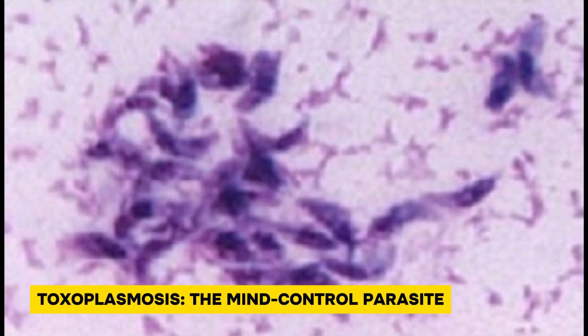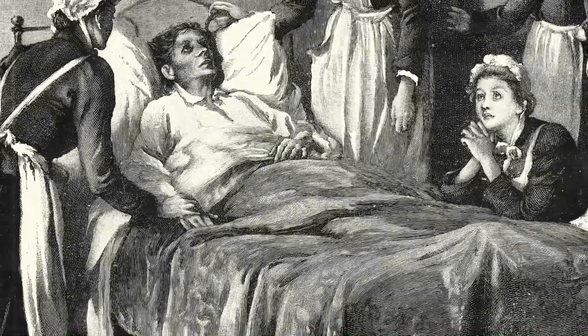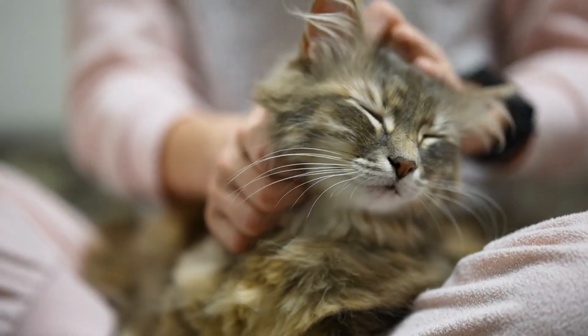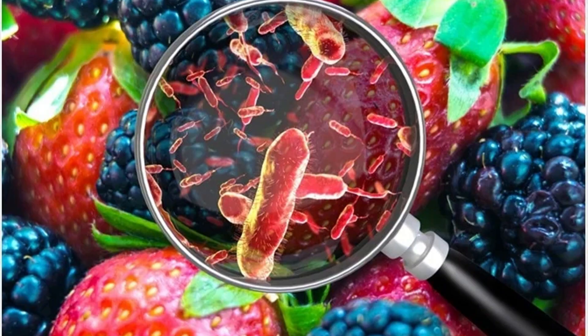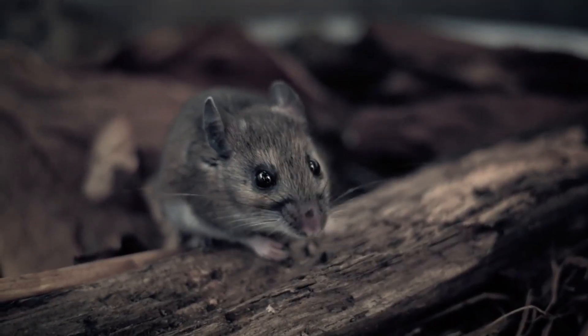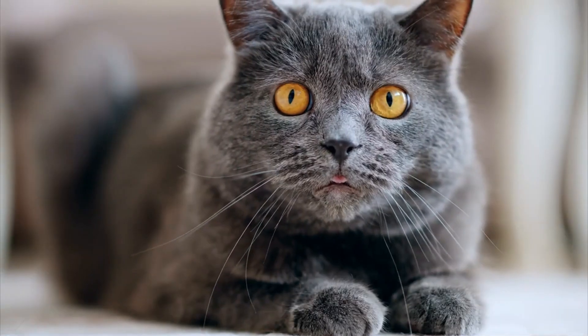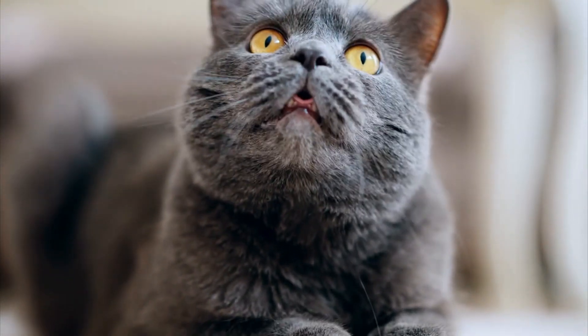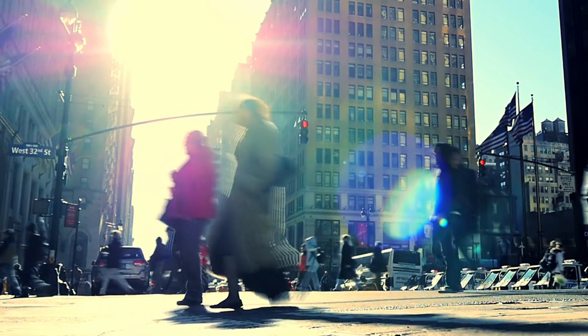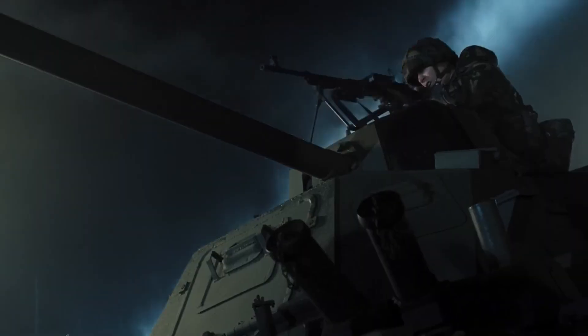Toxoplasmosis: the mind-control parasite. Toxoplasma gondii, a protozoan parasite, is another candidate due to its ability to alter host behavior. Found in mammals including humans, it is transmitted through contact with infected animals — especially cats — or contaminated food. In rodents, toxoplasma manipulates the brain, reducing fear of predators and increasing risk-taking behavior, which benefits the parasite by facilitating its transmission to cats, its definitive host. In humans, toxoplasma infection is often asymptomatic but can subtly influence behavior. Studies suggest it may increase impulsivity, aggression, or even the risk of schizophrenia in some individuals. Approximately one-third of the global population is infected, yet severe effects are rare. A zombie-like scenario would require toxoplasma to evolve extreme behavioral manipulation, rapid transmission, and widespread neurological damage — far beyond its current capabilities.